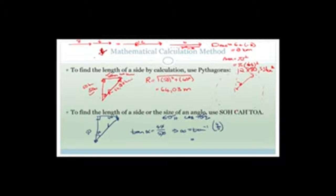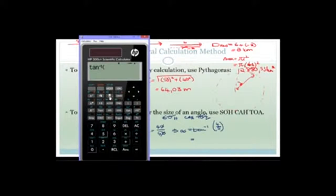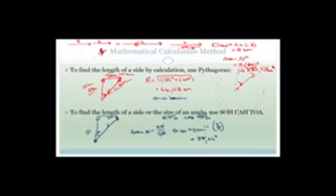Therefore, alpha equals the inverse tan of 4 over 5. Using the calculator, we go shift tan of 4 over 5, close bracket, which equals 38.66 degrees. So this is on a bearing of 38.66 degrees, or you could say it's 38.66 degrees east of north.